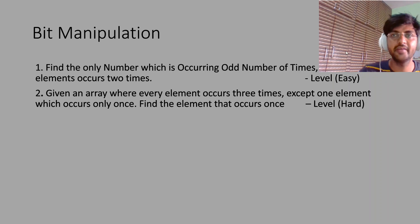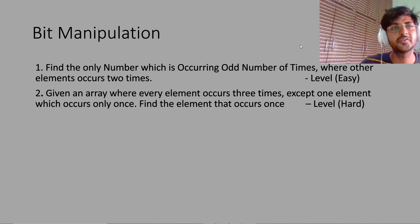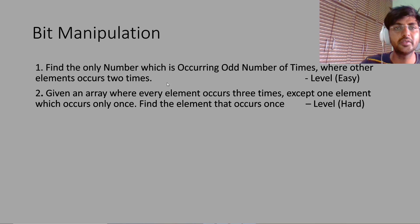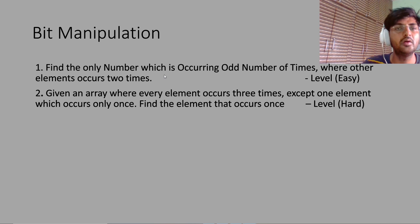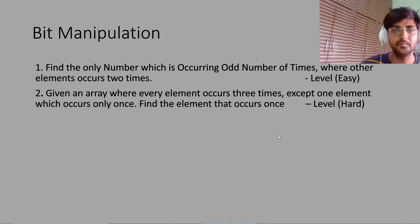Today we will discuss one of the very famous questions based on bit manipulation. It is part of the algorithm where we talk about bit algorithm questions. There are two important questions here — the first is a basic question, and we will use the concept of the first one in the second. In the first question, you need to find the only number which is occurring an odd number of times, where every other element occurs two times.